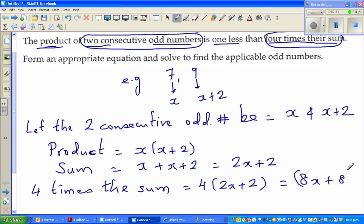Now we'll read the question again. The product of two consecutive odd numbers is one less than four times their sum. So what they are saying is, the product is one less than four times the sum.